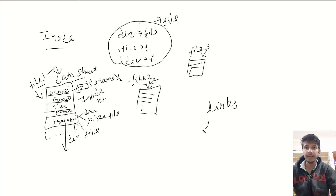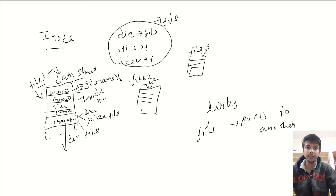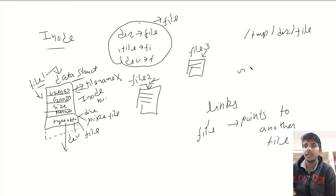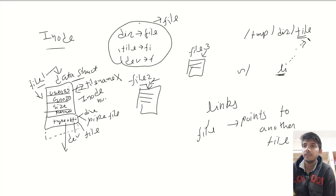A link is also a type of file which points to another file. Links are generally used for creating shortcuts. For example, let's say we have a folder in the path with a file inside it. In my home directory, I can create a link for this file — let's say the name of the link is 'li'. Basically, this link is now pointing to the file. If I am opening this link, the contents of the file will be opened. If I am changing the content of the link, then the content of the original file will also be changed.